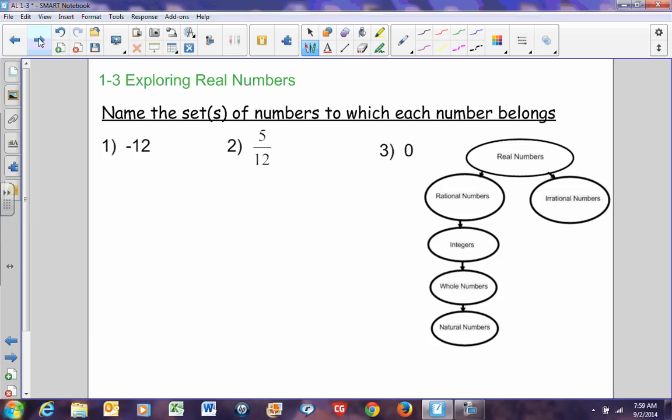Let's take a look. If we're going to name the set of numbers to which each of these numbers belongs, negative 12. I know that's not a counting number. I know it's not a whole number. But it is an integer because it's a negative number. So, if it starts here in integers, I just list everything from integers up the chart. So, it is an integer, it is a rational number, and it is a real number.